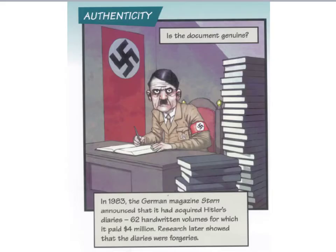Authenticity is about whether or not the document we're looking at is genuine. The types of questions sociologists should ask to ascertain the authenticity of a document include: Is the document what it claims to be? Is it complete? Is it a copy? Is it free from errors? And who actually wrote the document?